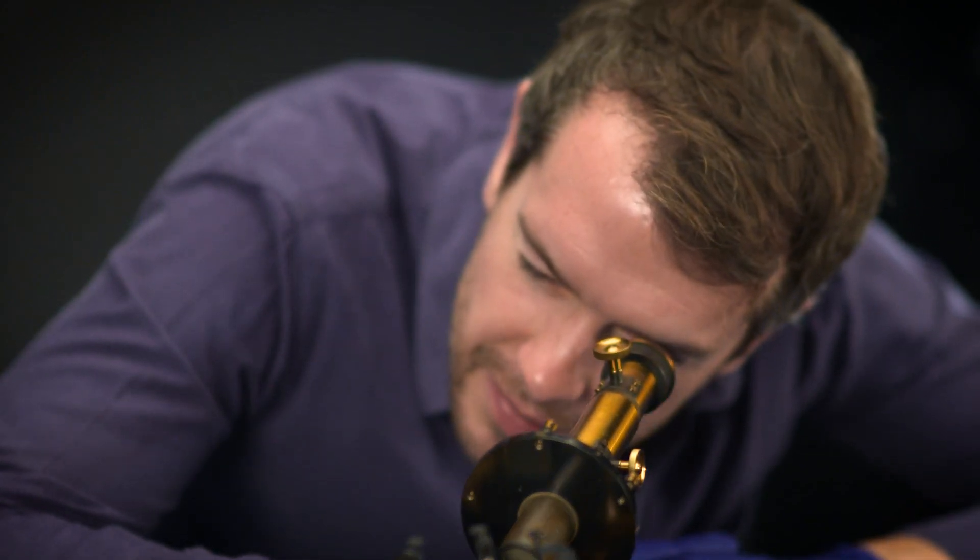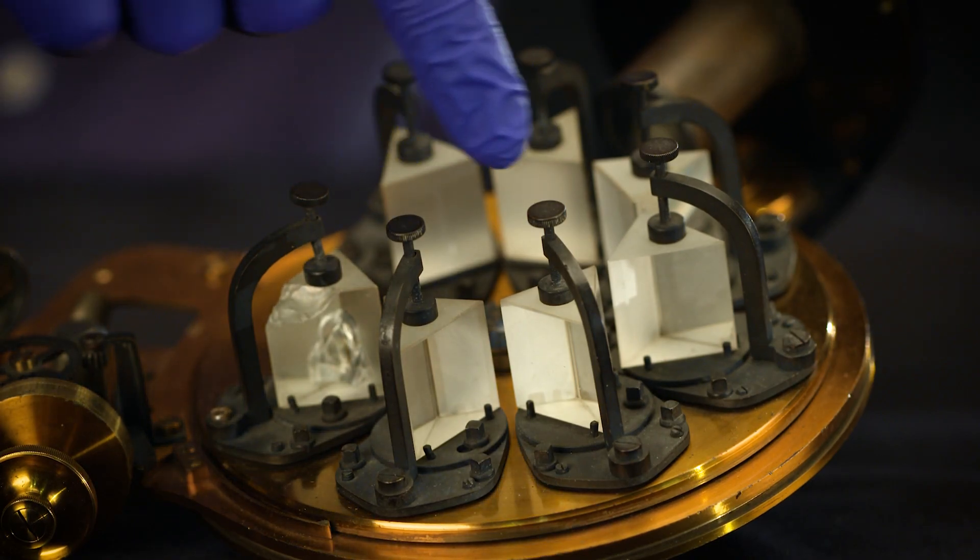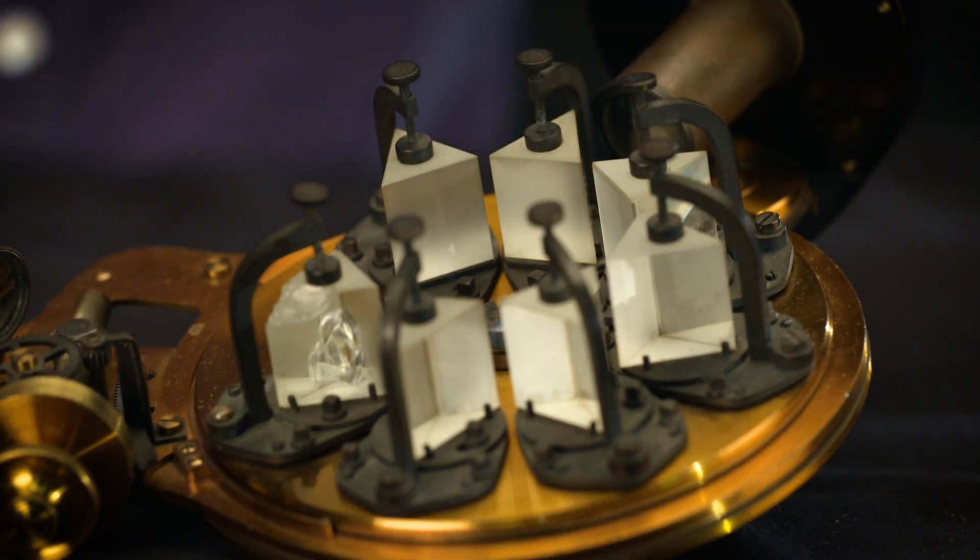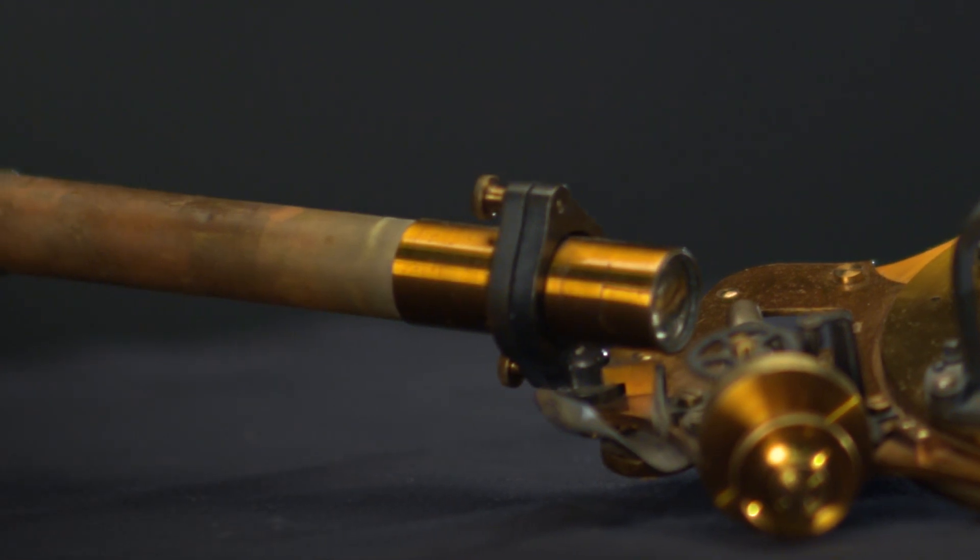Sunlight would have come in one of these tubes and bounced around the seven prisms which would break the light into a rainbow spectrum where you would see tiny dark lines crossing the spectrum.